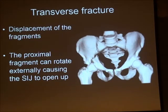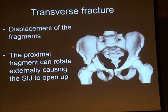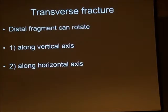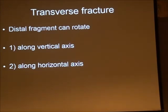When thinking about displacement of this fracture type, it's important to realise that the proximal and distal fragments can rotate in various planes. The proximal fragment can externally rotate — you may see a very slight opening of the SI joint — and this is important to bear in mind when trying to reduce these fractures. The distal fragment can rotate in two planes, which is also really important to appreciate.